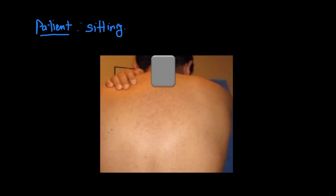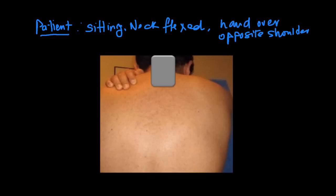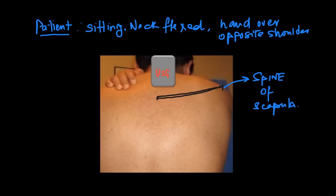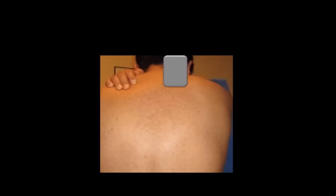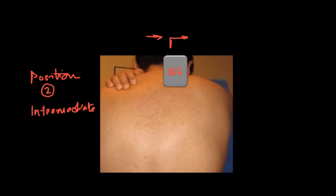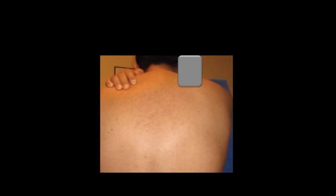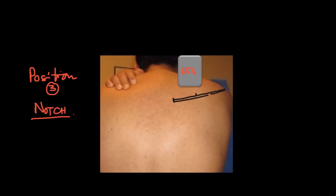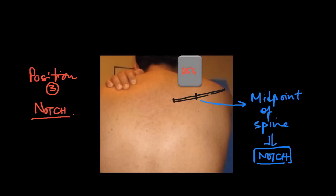On a patient, we have the patient in a sitting position with the neck flexed and the hand on the opposite shoulder. At this point we will be able to demarcate the spine of the scapula, marking both the medial end and the lateral end. Keeping the ultrasound probe directly over the medial end in position one, as we move the probe more laterally we come to position two. Moving the probe further laterally we come to lie directly above the suprascapular notch, which corresponds to the midpoint of the spine of the scapula, lying just cranial to it.